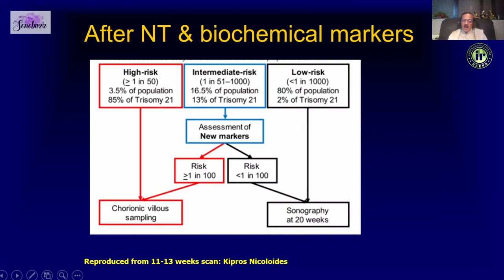After calculating the adjusted risk, we look at the value. If the risk is very high — say 1 in 50 or 1 in 100 — you need to do an invasive test. If the risk is very low — say above 1 in 1000 — then just repeat a routine target scan at around 18 weeks of gestation.